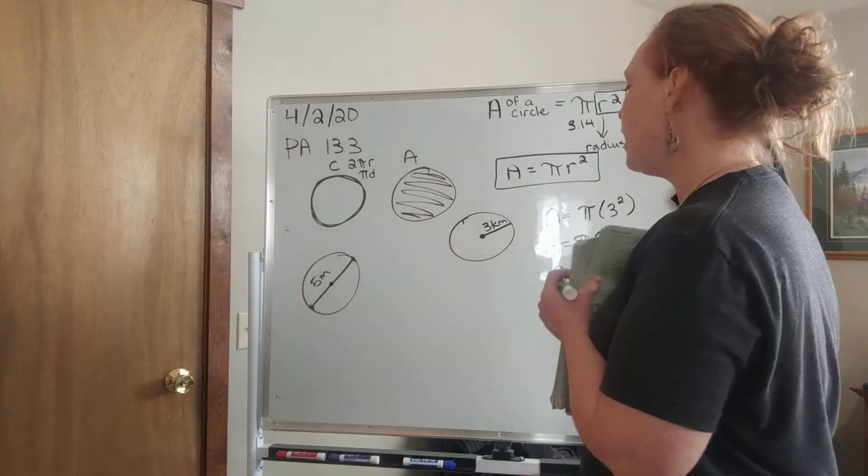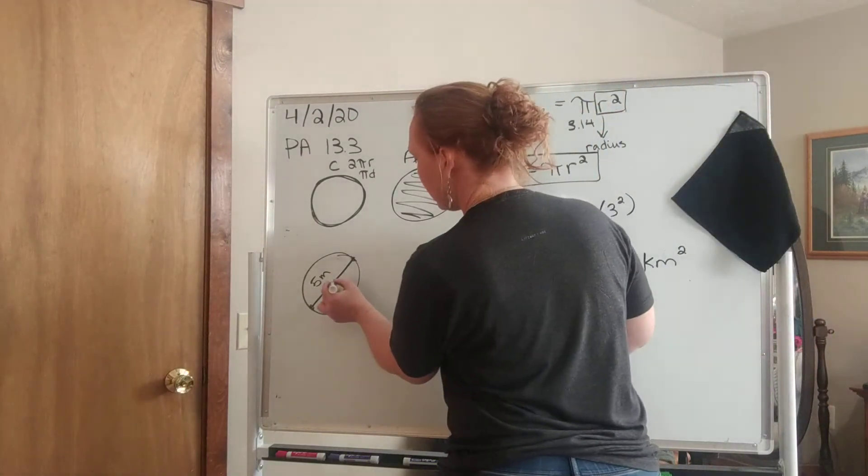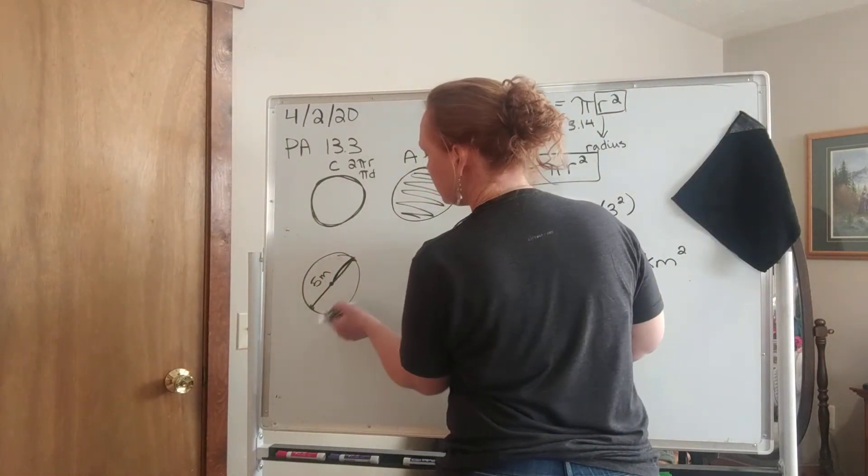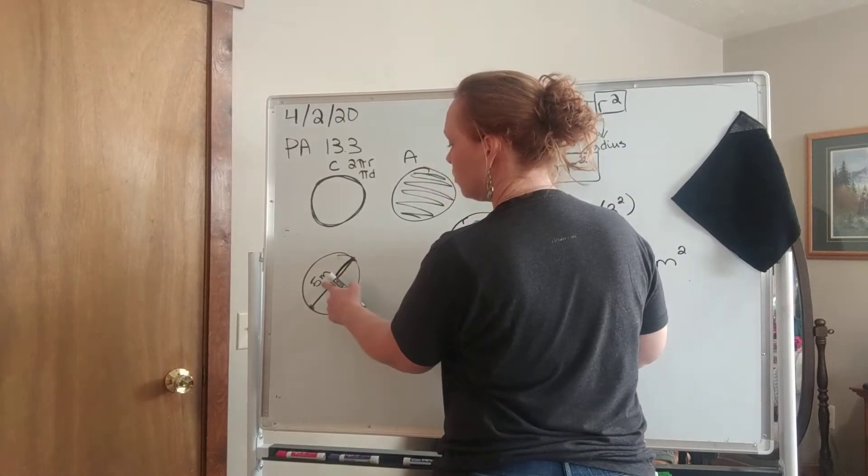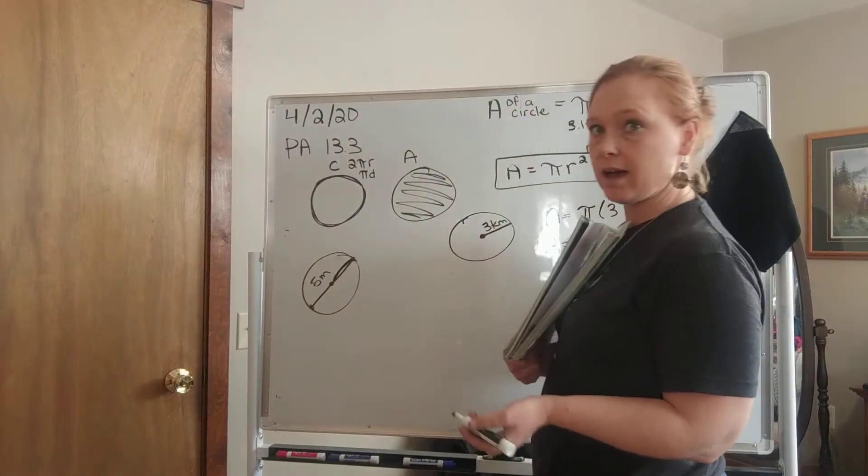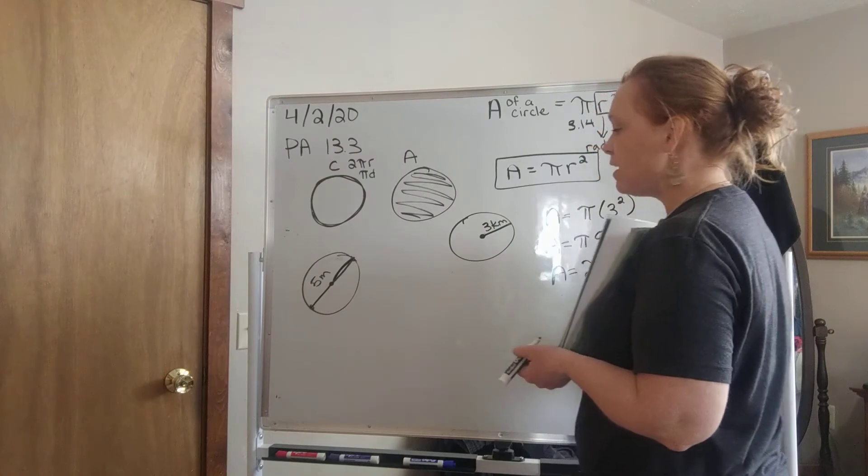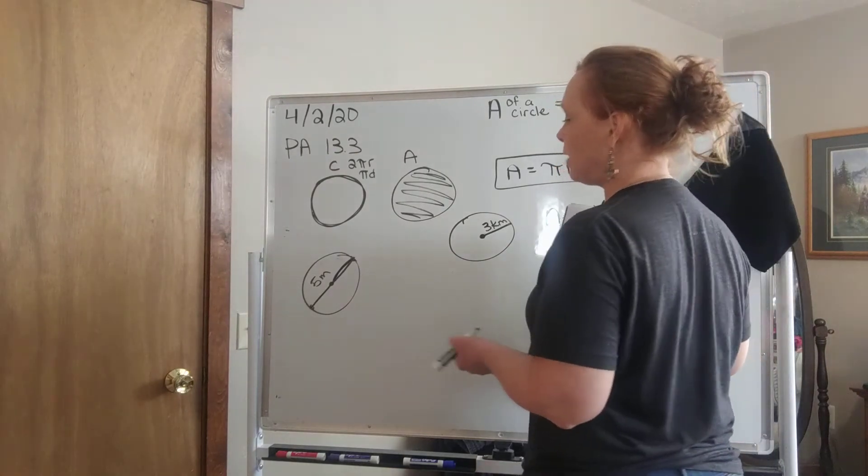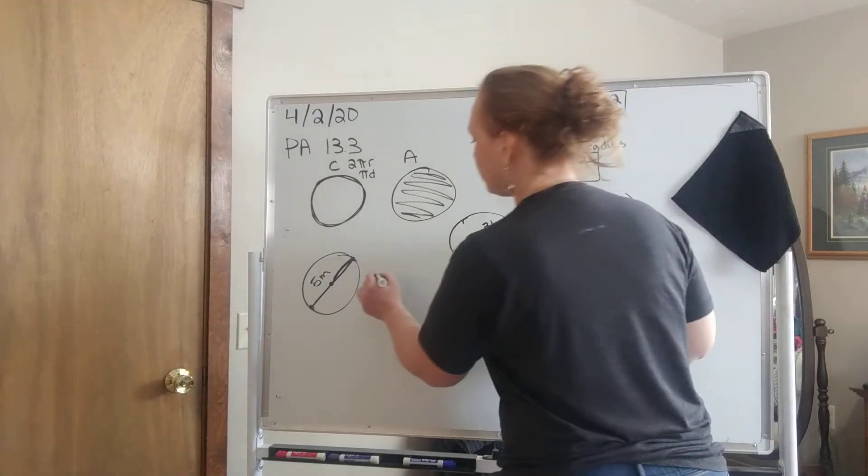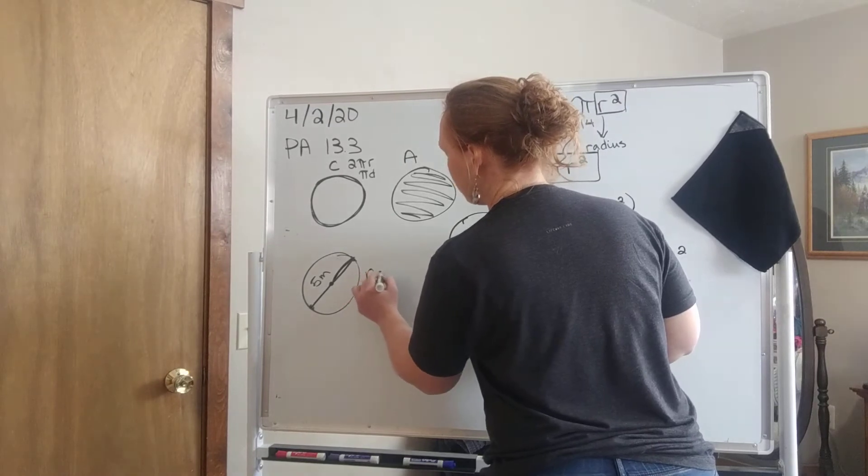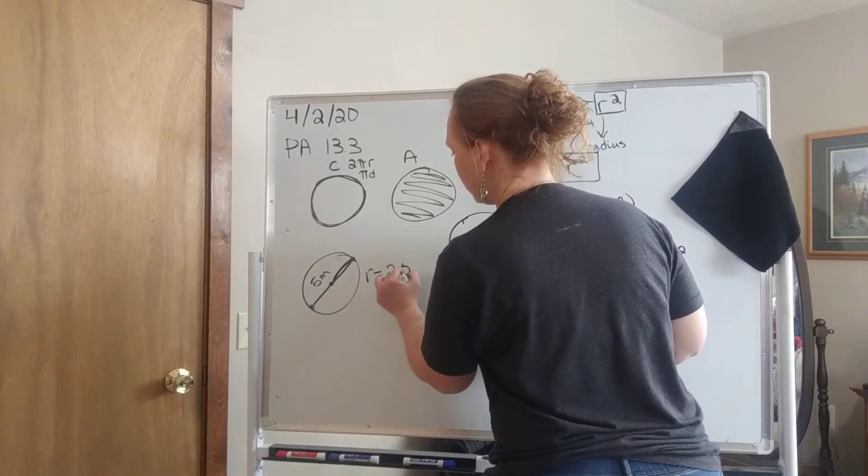So what do we have to do to just find this section, to find the distance here? Well, we take 5 and we cut it in half, right? So we do 5 divided by 2, and if we do 5 divided by 2, we would get 2.5. So the radius for this problem equals 2.5.